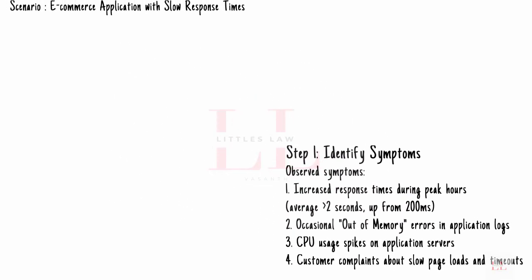Thank you for watching the entire first video. Today we discussed identifying the symptoms — increased response times, out-of-memory errors, CPU spikes, and customer complaints. Tomorrow we are going to see how to gather initial data: how to enable GC logging, how to monitor system resources, and how to analyze application logs for error patterns. We'll cover all of these core concepts in the next video.